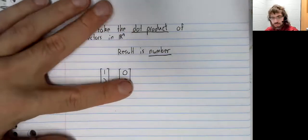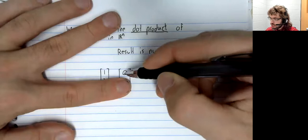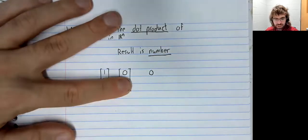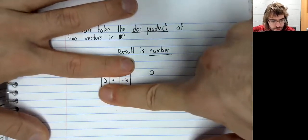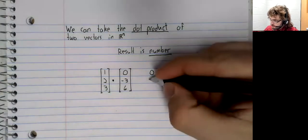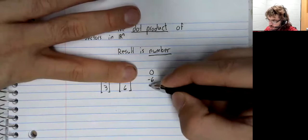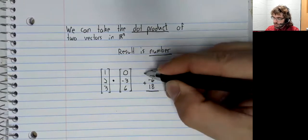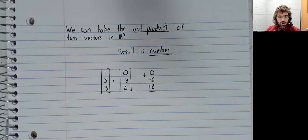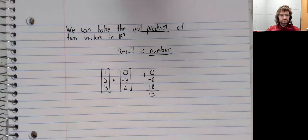To take the dot product, we go down and multiply component-wise. One times zero is zero, two times negative three is negative six, six times three is 18. And then we add all of these numbers together. The dot product of these two vectors is 12.